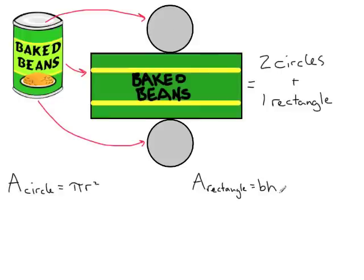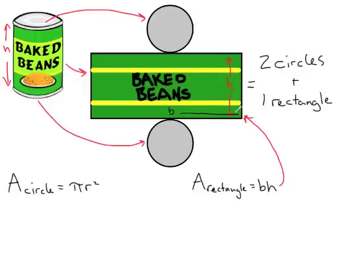The height of the rectangle is right here — it's this side that's really the distance between the two circles. So if we look back at our cylinder, the distance between the two circles is the height. The base is going to be this distance along here, so this is the base of our rectangle.